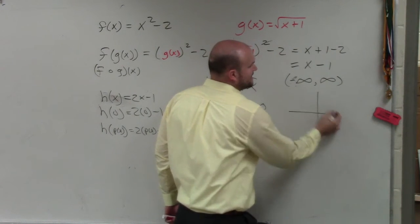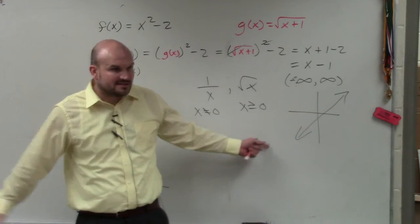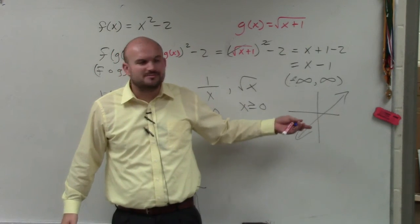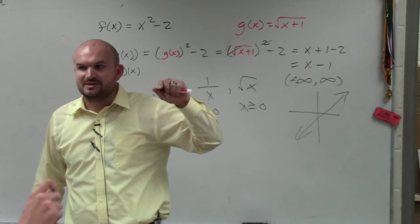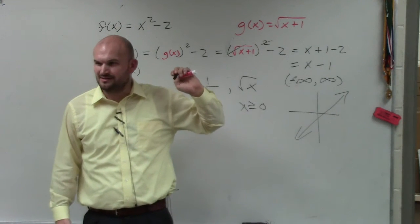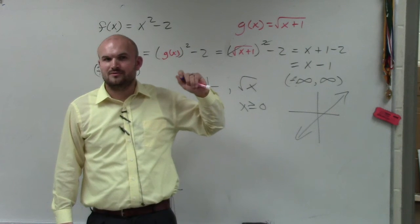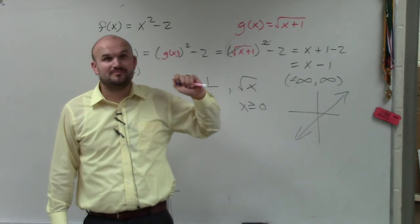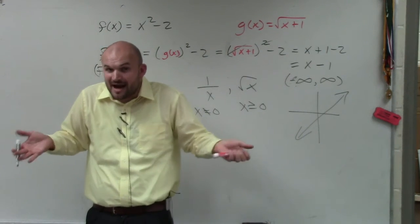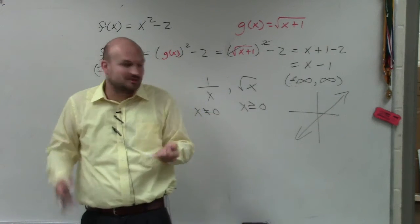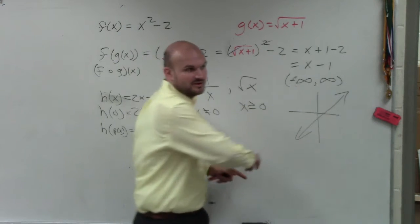Think about this: x minus 1 produces a line, right? A line is going to be true for all real numbers. We talked in class — there's a way that we talked about when we don't have numbers in our domain. Does anybody remember what that was called? It rhymes with 'pistonuity' — discontinuity. If there's a discontinuity in your graph, you know there are some points that are not part of your domain. Here, there's no discontinuity, right? That's continuous, so it's all real numbers.